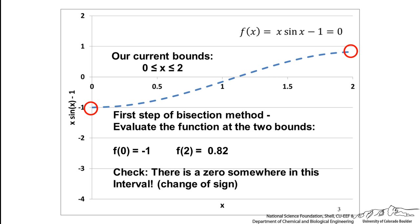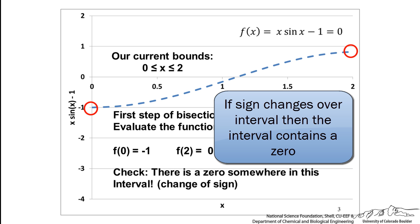Because f, which is our left bound, is negative, the sign of the function at our right boundary is positive. If this is a continuous function, that means that somewhere the function must equal zero. So we are on the right track.